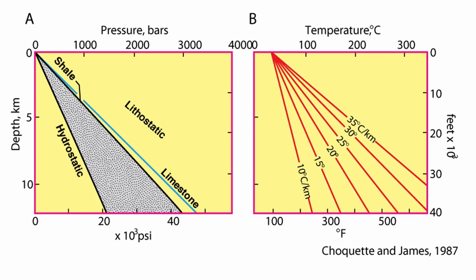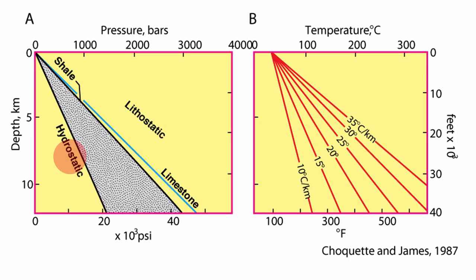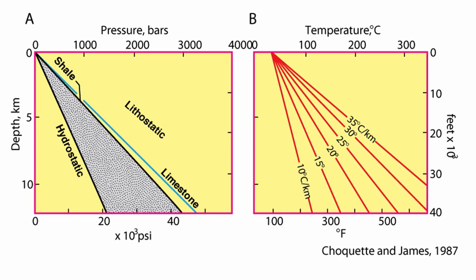The burial regime is characterized by two things: an increase in pressure and an increase in temperature. The increase in pressure depends on both hydrostatic pressure (the pressure of the fluid) and lithostatic pressure (the pressure of the rock). Temperature depends on the geothermal gradient, which can vary vastly from 10°C per kilometer up to typically 25–30°C per kilometer, and as high as 50–60°C per kilometer depending on the tectonic regime.